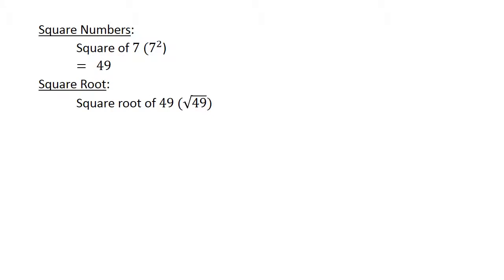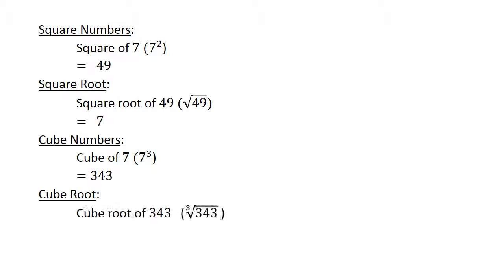Square root of 49 equals 7. Cube numbers: cube of 7 equals 343, and the cube root of 343 equals 7. Decimal addition.